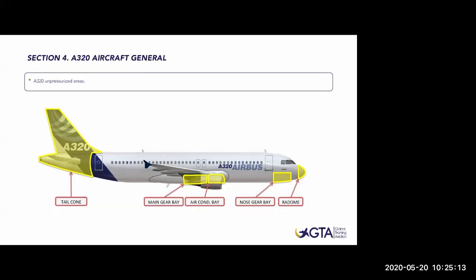For everybody asking what happens with pets during a flight - the cargo is pressurized and also conditioned. When we have an animal or pet on the aircraft, the pilots are informed and we take care of it. We pay attention to the temperature in the cargo and try to make the ride smooth, just like for passengers. When we have an animal in cargo, we are even more careful.